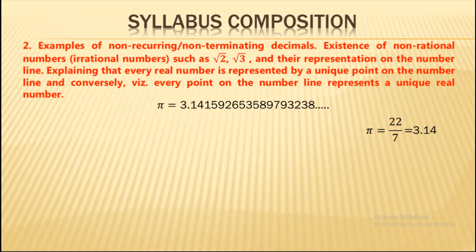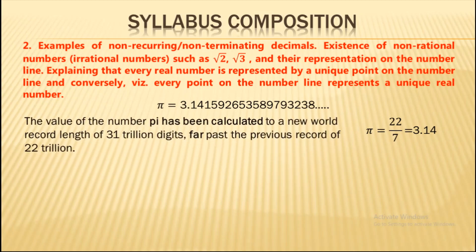No matter how far we calculate pi, we will find no repeating block and it never ends. Such numbers have a non-recurring, non-terminating decimal expansion. In fact, the value of pi has been calculated to a world record length of 31 trillion digits, surpassing the previous record of 22 trillion digits.